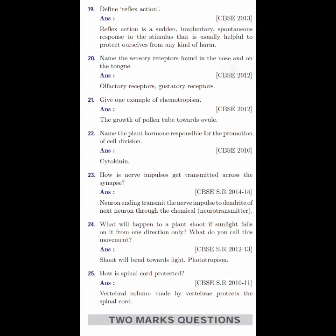What will happen to a plant shoot if sunlight falls on it from one direction only? What do you call this movement? The shoot will bend towards the light. It is responding towards the light, so we call it phototropism. In the year 2012 and 2013 they have asked this question.